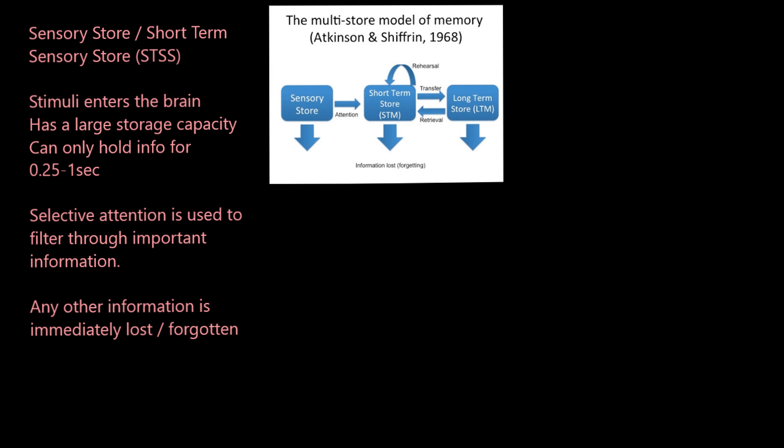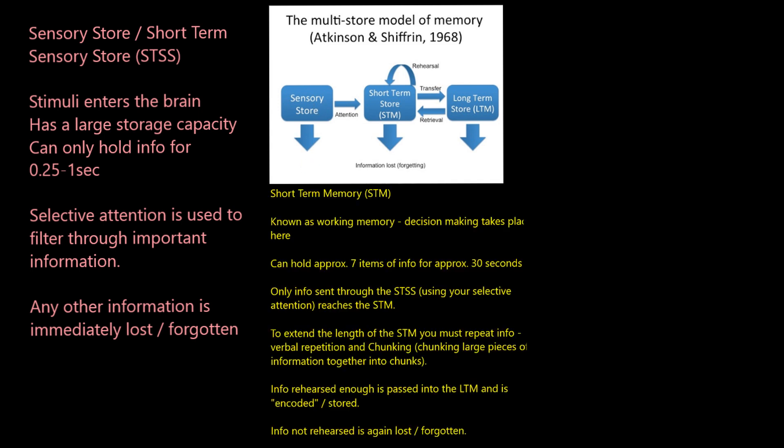A common sport example would be a penalty taker in football, a rugby player taking a conversion, or a basketball player taking a free throw. Lots of information hits their short-term sensory store — noise and sights from the crowd, teammates, rivals. They've got to block all that out and focus on the most important thing: making the penalty or conversion. You focus on the important information and block out the irrelevant. Whatever you decide not to focus on is lost, and what you pay attention to passes through to your short-term memory.